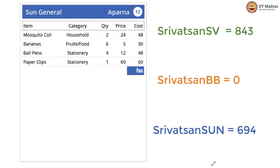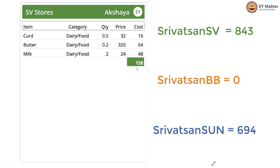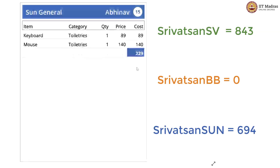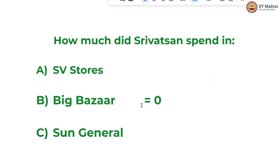Adved, Aparna, George, Abhinav, Ahmad, Akshaya, Adved again, Abhinav, Akhil, Neeraja — and so Srivatsan has not made any purchases in Big Bazaar. The Big Bazaar sum stays 0. In Sun General he spent 694 rupees, and in SV stores he spent 843 rupees.